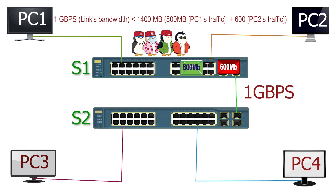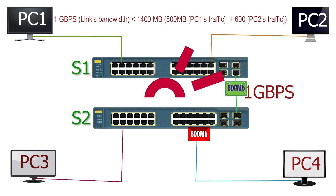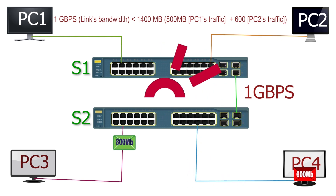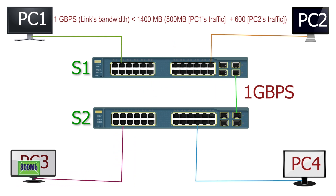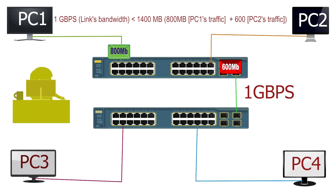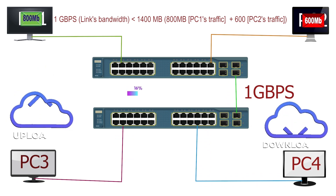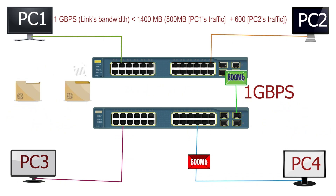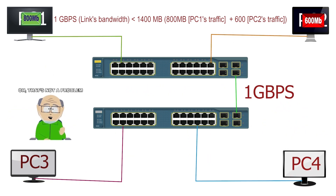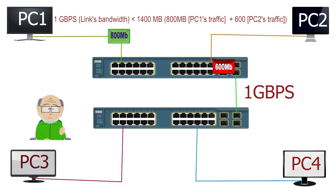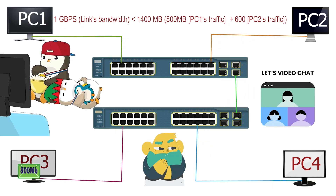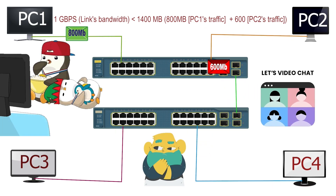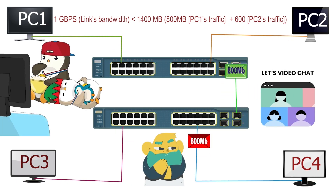In this case, Switch 1 queues both PCs' traffic. It first sends one PC's traffic, then it sends the second PC's traffic. In normal circumstances, users will not notice this delay — for example, if they are uploading, downloading, or exchanging text files, this delay does not cause any interruption. But if they are watching a movie or making a video call, this could have a negative impact on their experience.